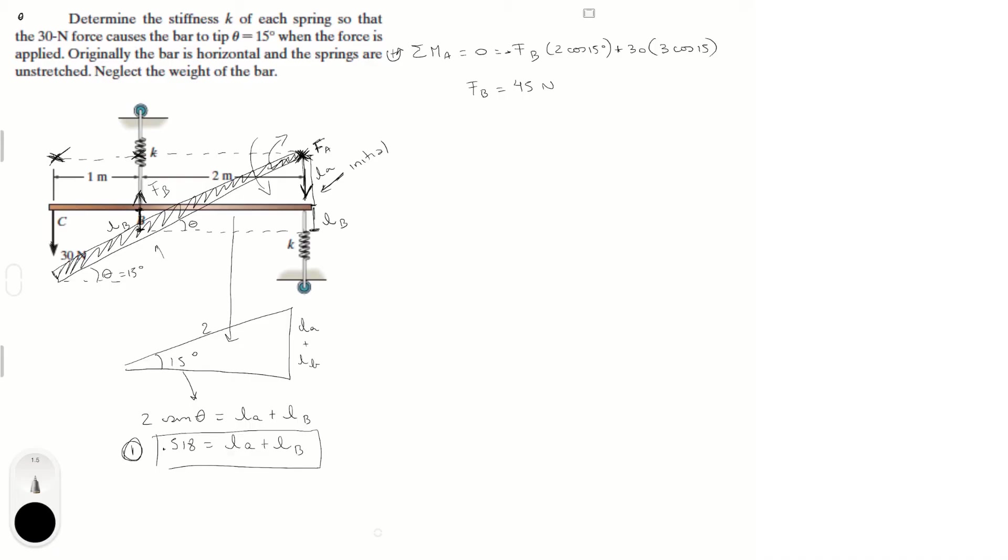And then, doing the sum of the forces in the y, you can find F of A, which the sum of the forces in the y is equal to 0. We get the 30 newtons going down, plus F of B, which we just found, minus F of A.